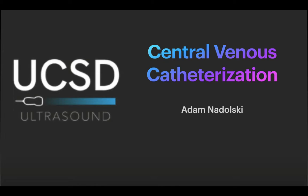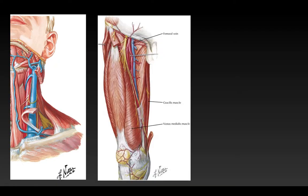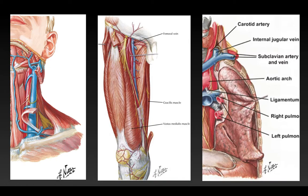Hi, I'm Adam Zelsky, and this is Central Venous Catheterization from UCSD Ultrasound. There are three main locations that we use for central line placement: the internal jugular vein, the femoral vein, and the subclavian vein. For the purposes of today's lecture, we'll focus on the internal jugular vein as an example.